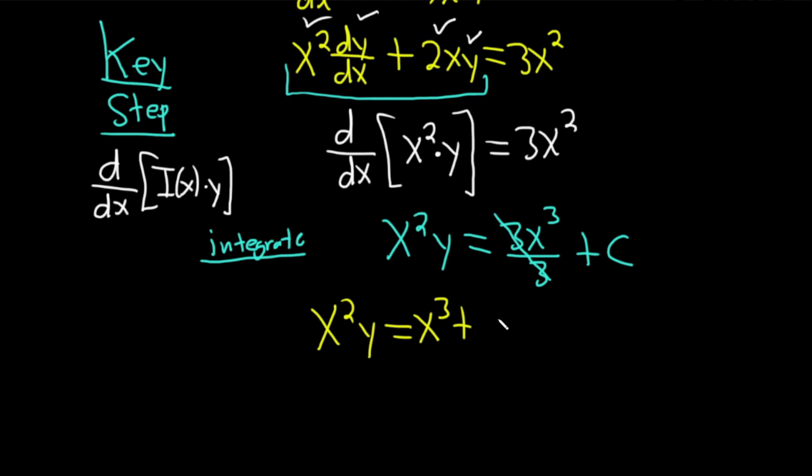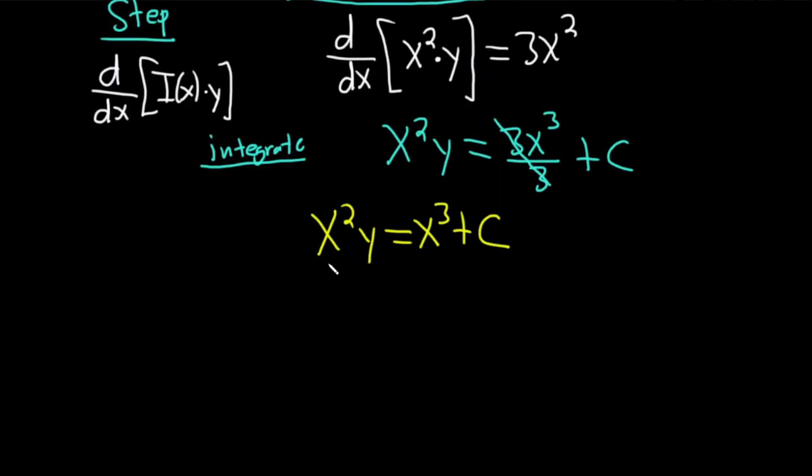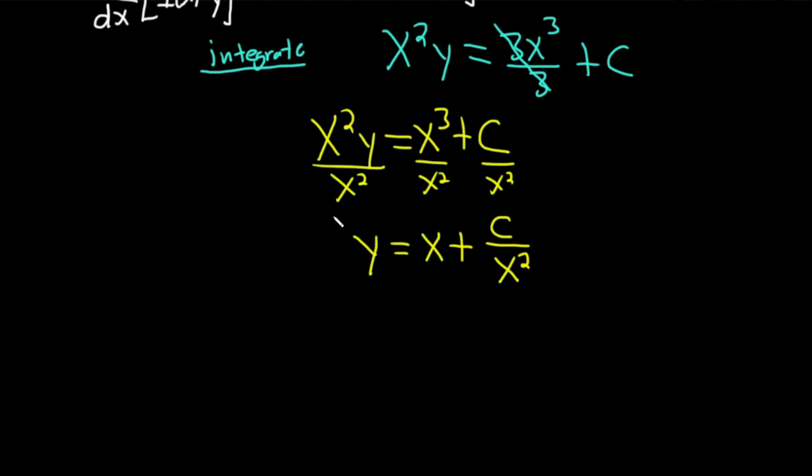In theory, you could leave your answer like this. I'm going to go ahead and solve for y by dividing by x². So when we do that, we end up with y = x + C/x². That's the solution to the differential equation.